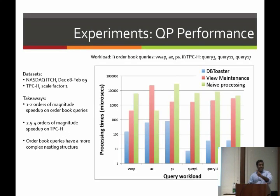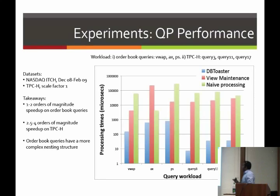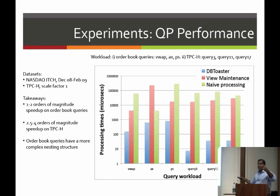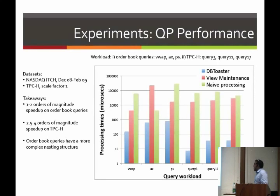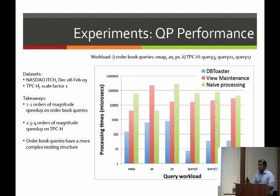I mentioned we're on version four of our compiler; these results are from version two. This experiment shows the processing time of our algorithm, DBToaster, compared to both view maintenance and repetitive processing — where every update just reruns the query from scratch. We use two kinds of datasets: a financial dataset which is an order book, and simulated changes to TPC-H datasets. The y-axis is a log-scale measure of processing time. The high-level takeaway is that we do a lot better in general — we're talking a couple of orders of magnitude — and this is with everything fully materialized. There's no parallelism here whatsoever.